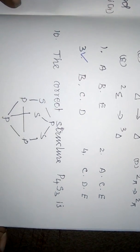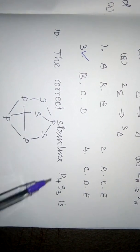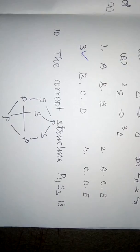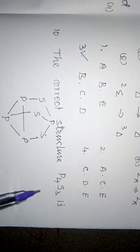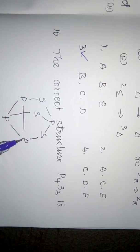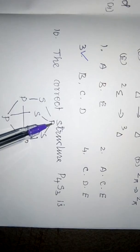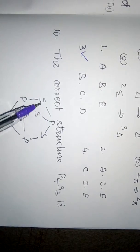The next question is the correct structure of P4S3. In the structure of P4S3, three phosphorus atoms form a triangular base and one more phosphorus atom sits at the cap on top. There are three P-S-P bridges.